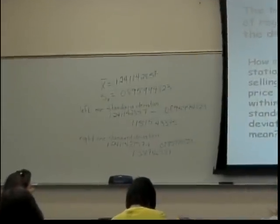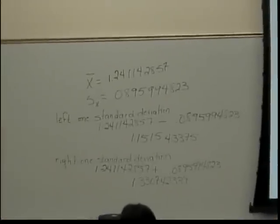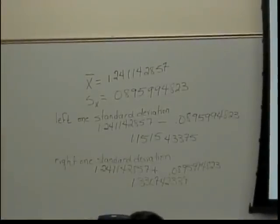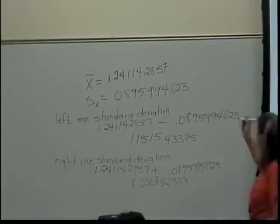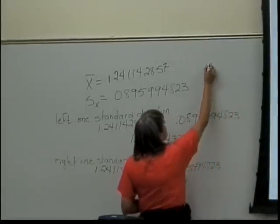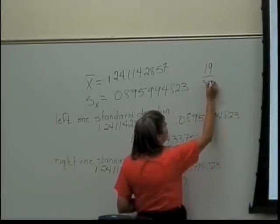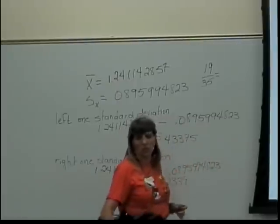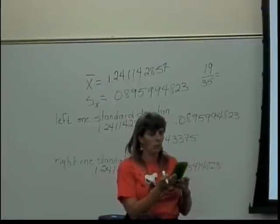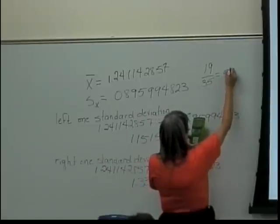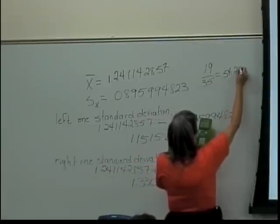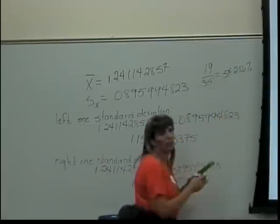It's within one standard deviation of the mean. So it's 19 over 35 — you shouldn't have 6, because the total number of things is the number of stations, so your denominator should have been 35. So it's 19 over 35, which tells me how many stations have their gas within one standard deviation of the mean, which turns out to be 54.286% — because I'm running out of space.